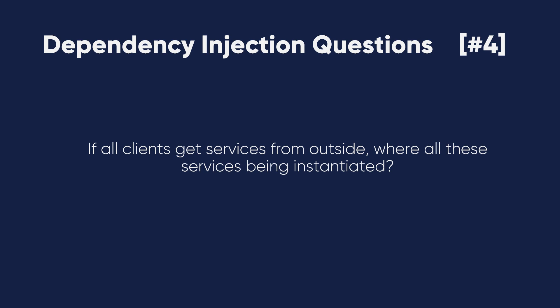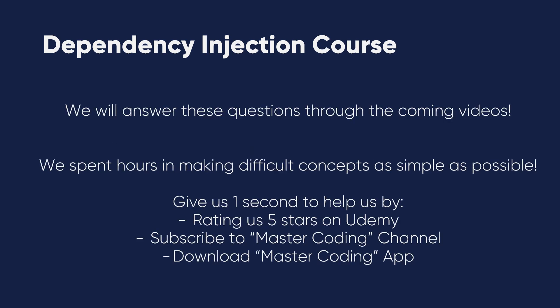Question four — the most important one: if all clients receive services from outside, where are all these services being instantiated? This is related to the context of services, clients, and dependency injection users. Imagine multiple clients receiving services — those services must be constructed somewhere. This is where the larger-scale structure comes in, and it is the core reason why dependency injection frameworks exist. We will answer all these questions in the coming videos.